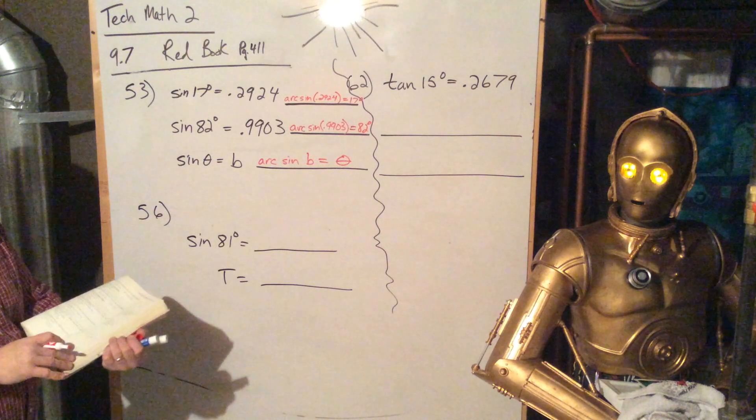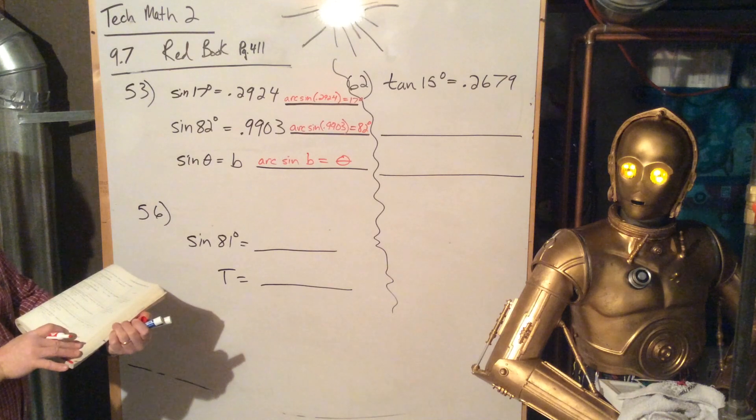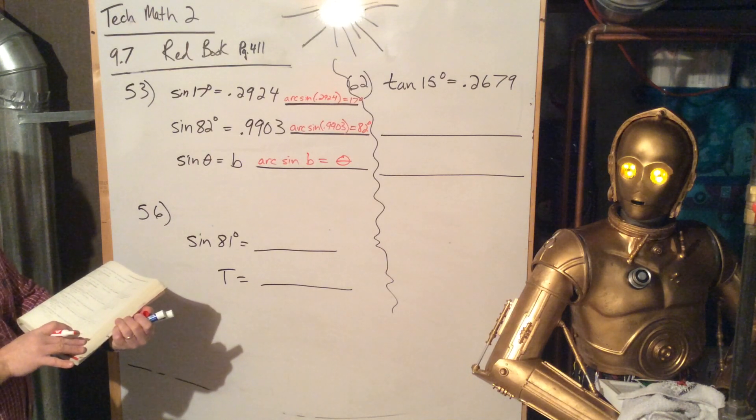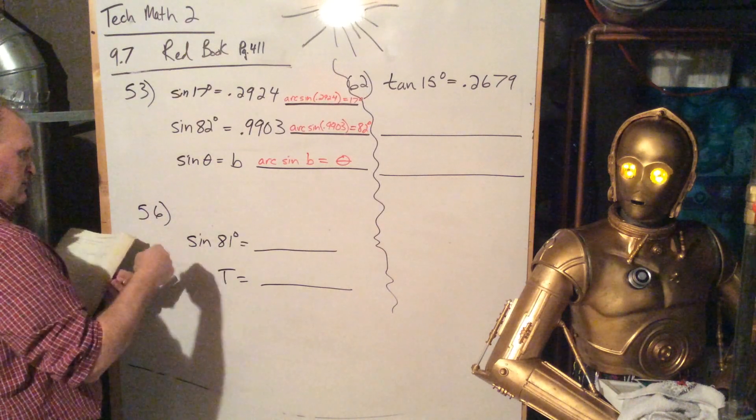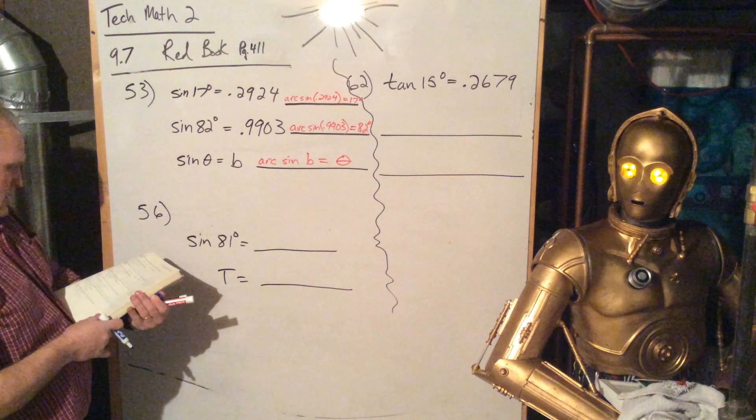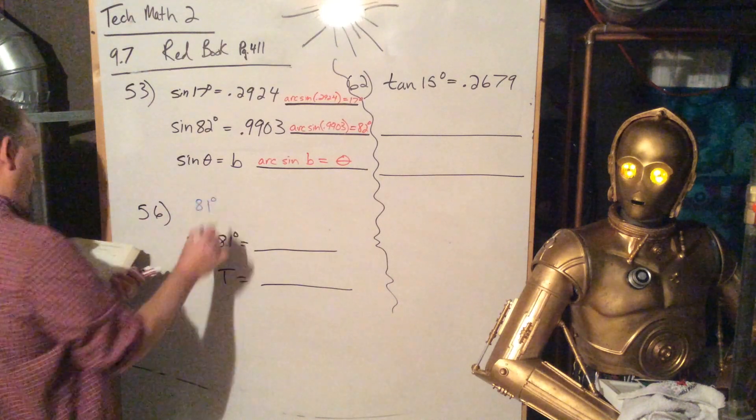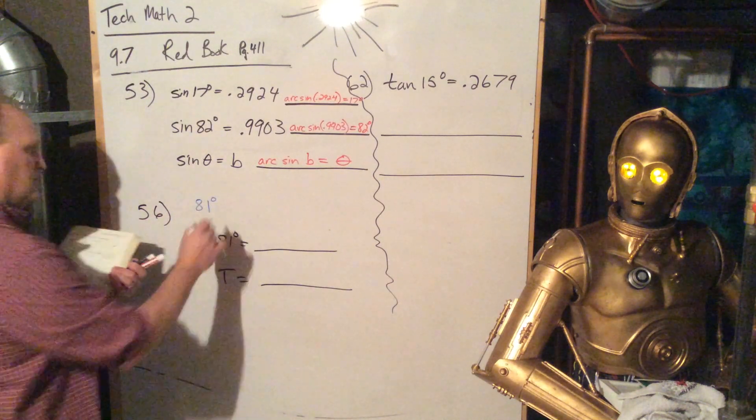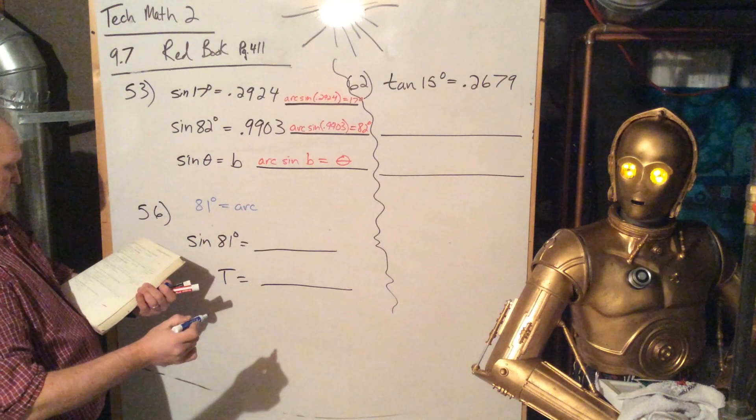So on this one, what do they want me to do? Find T. Oh, they gave us. So on this one, I didn't write down the whole problem. Whoopsie. Oh no. 81 degrees is equal to the arc sine of T.